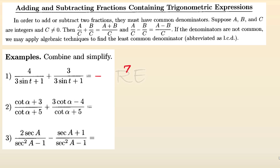For example 1, we're going to add the numerators: 4 plus 3 is equal to 7, because the denominators are the same. The result is 3 sine T plus 1.